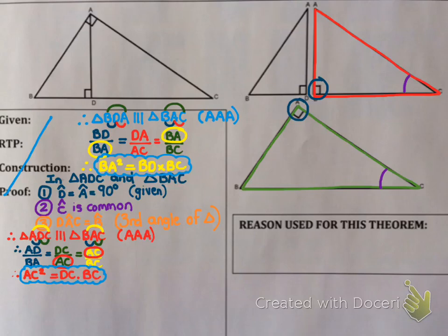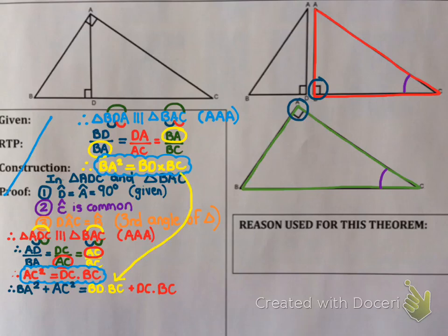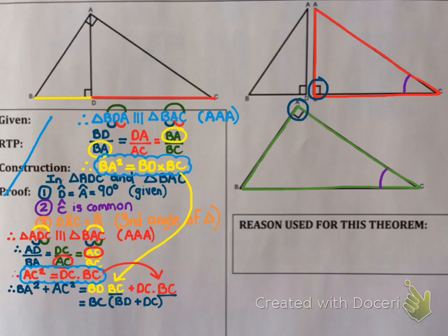Now, what was I trying to prove? BA squared plus AC squared. Well, BA squared equals BD times BC, and AC squared equals DC times BC. Adding them together: BA squared plus AC squared equals BD times BC plus DC times BC. BC is a common factor, so I take it out: BC times (BD plus DC). Now BD plus DC together equal BC. So I get BC times BC, which is BC squared. And that's how you prove Pythagoras' Theorem — using two similarities and then adding them together.